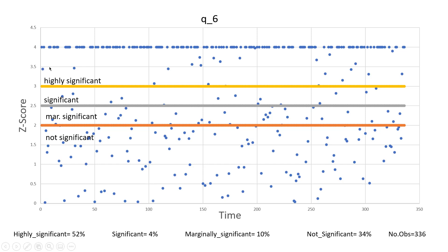All of those fours are points which may be all over the place and are highly significant. In the region between blue and gray these are significant, between gray and red these are marginally significant, and everything below two is not significant. If you plot this in more detail, you may see that it is significant in the rainy season and not significant in the summer, or it may be significant at some part of the watershed and not in other parts.